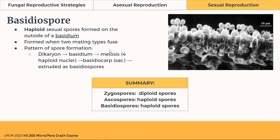Last is the basidiospore — a haploid spore formed on the outside of a basidium. Under the electron microscope it looks like budding, but the description is club- or bat-shaped. It's formed when two mating types fuse; it has a similar pattern of spore formation as the ascospore, with dikaryon formation, then the basidium undergoes meiosis. It forms 4–8 haploid nuclei, and results in a basidiocarp instead of ascocarp. The basidiospores are then extruded.